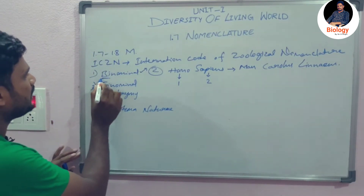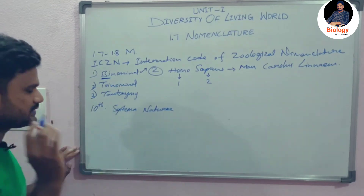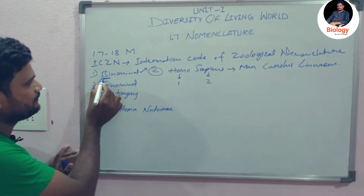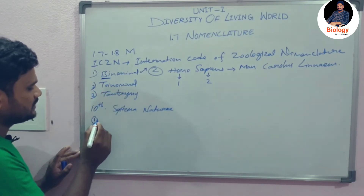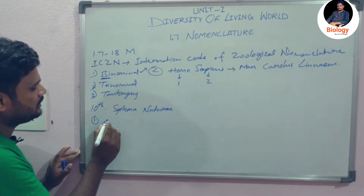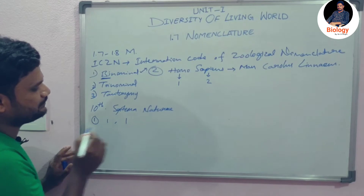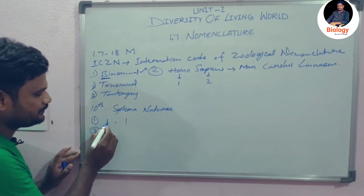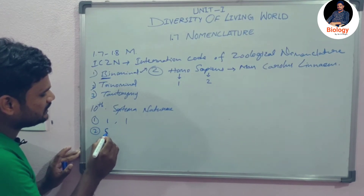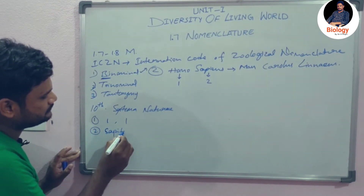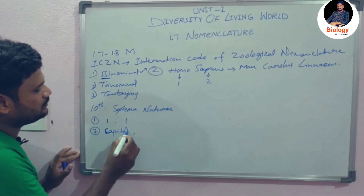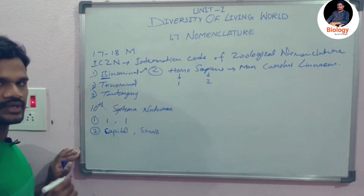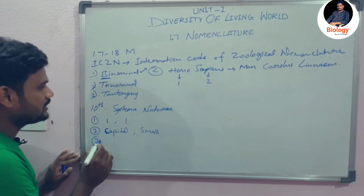Now let us see the rules of binomial nomenclature. The first rule is: as 'bi' means two, every name should contain two words. The second rule is: the first word should start with a capital letter, and the second word should start with a small letter.